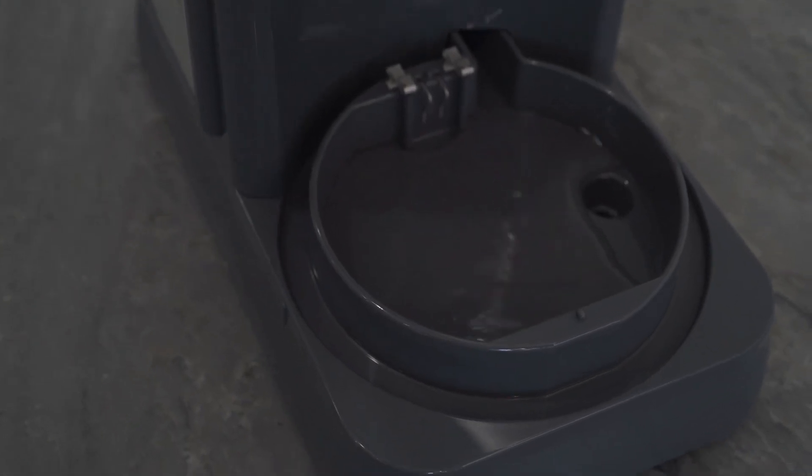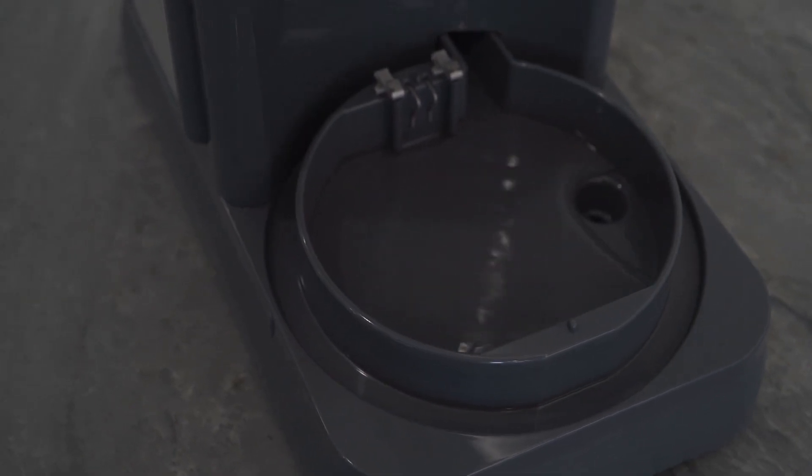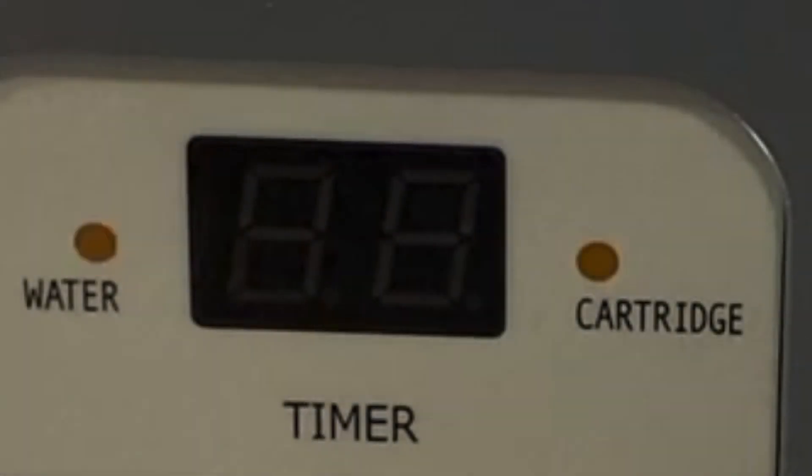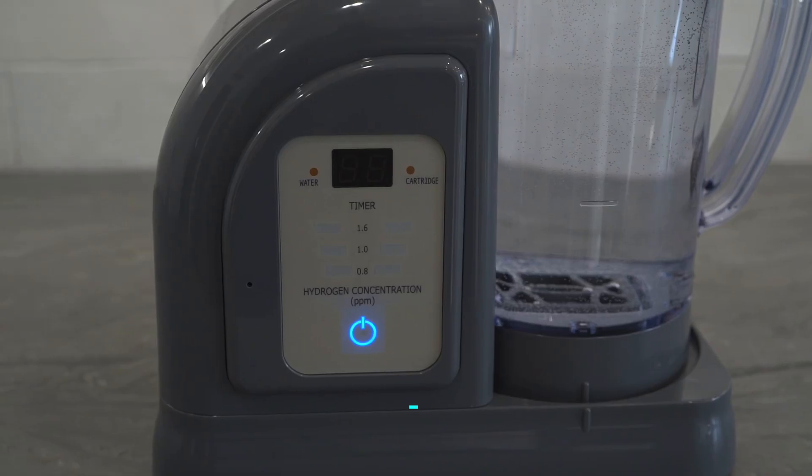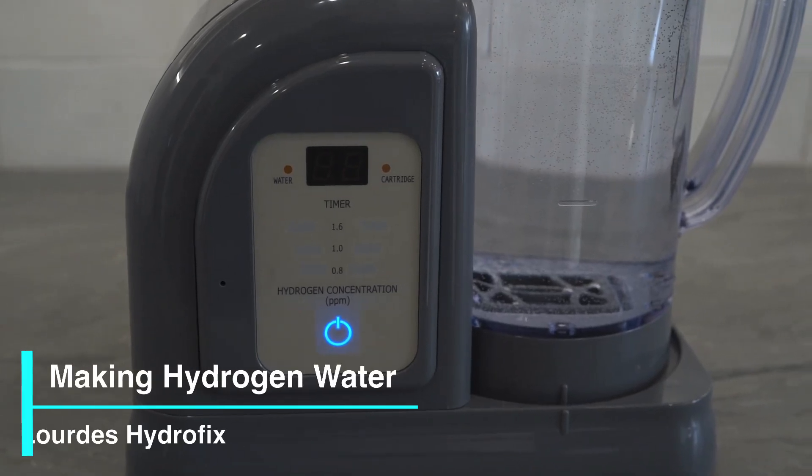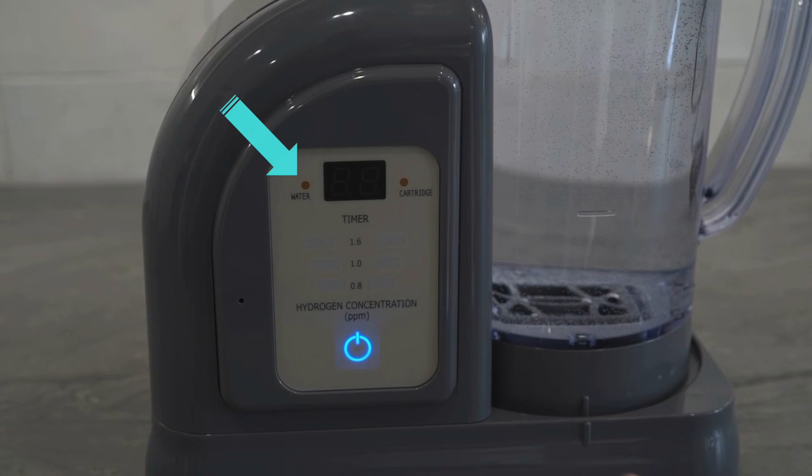Once the tray has the proper amount of water, the orange water shortage indicator light on the base unit will turn off. Your Hydrofix premium edition is now ready to make hydrogen water. Make sure the orange water shortage indicator light on the base unit is off and the blue light on the power button is lit. The device will not operate when the water shortage indicator is still on.